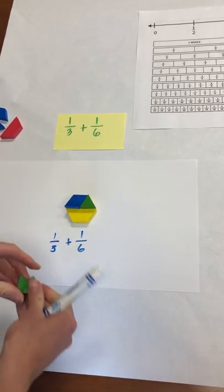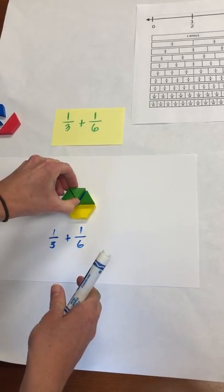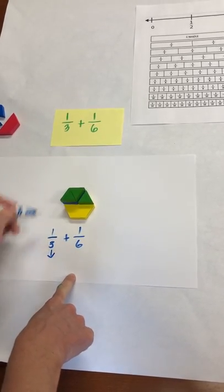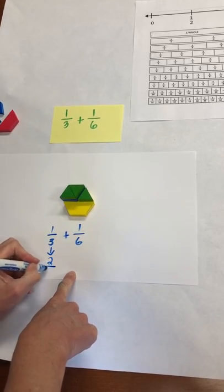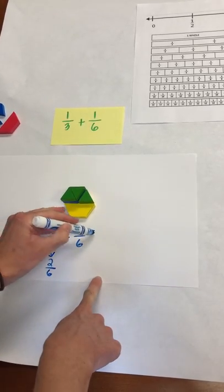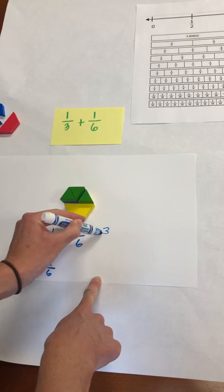I've now modeled one-third plus one-sixth. If we want to connect it to common denominators and equivalent fractions, we can show that one-third is equivalent to two-sixths. Two-sixths plus one-sixth equals three-sixths.